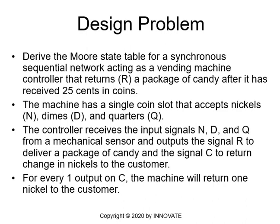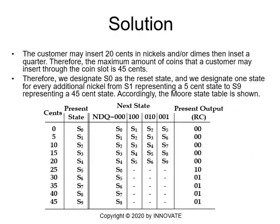For every output on C (change), the machine will return one nickel to the customer. The customer may insert up to 20 cents in nickels and/or dimes, then insert a quarter, so the maximum amount is 45 cents. Once 25 cents is reached, the candy comes out. We designate S0 as the reset state and one state for every additional nickel: S1 represents 5 cents up to S9 which represents 45 cents received by the machine.